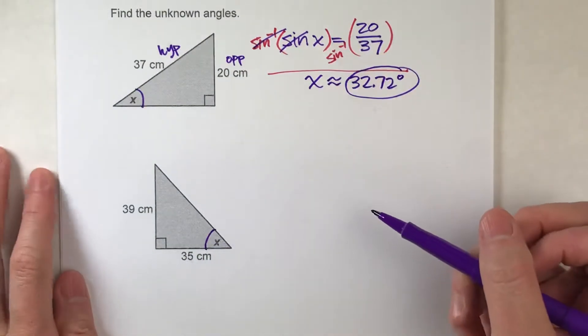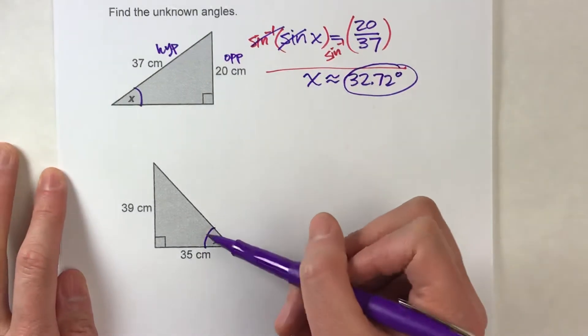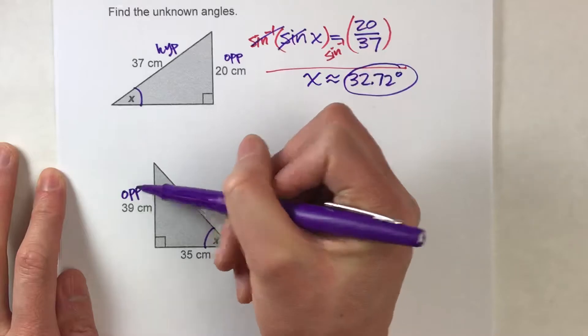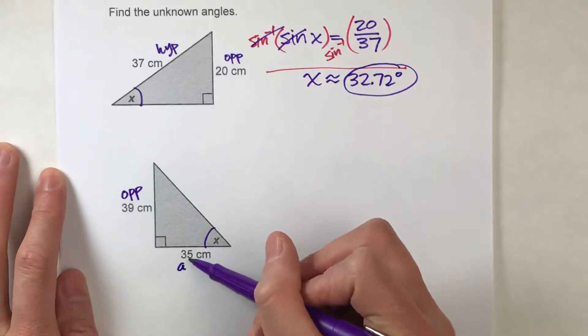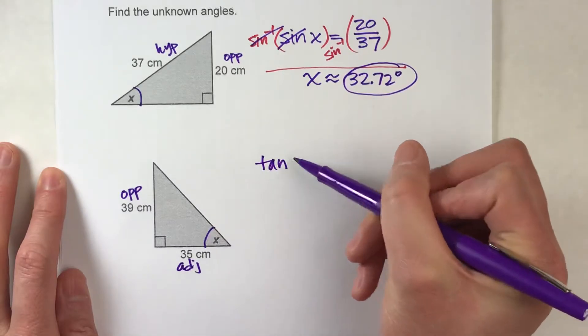Notice here's my angle we're trying to find. We're working with the two legs, not the hypotenuse this time. This is the opposite leg, this is the adjacent leg. So we're going to be using tangent.